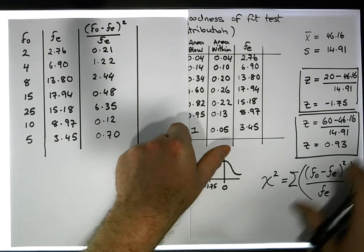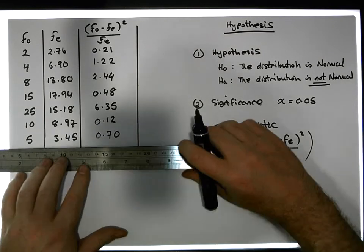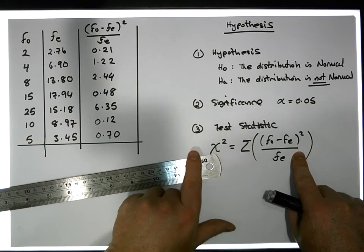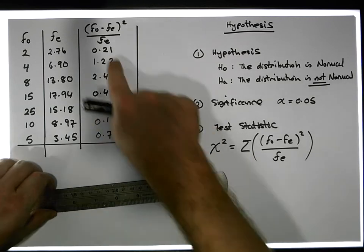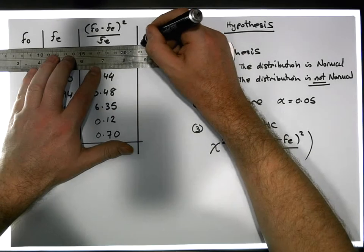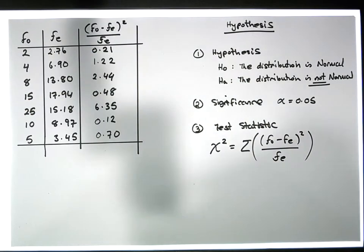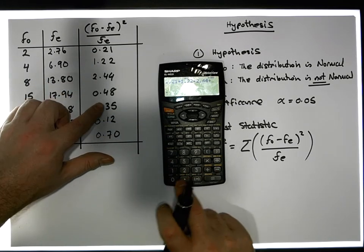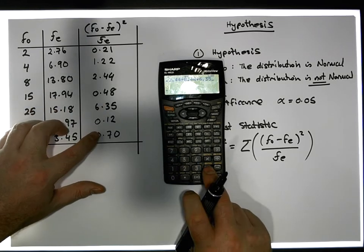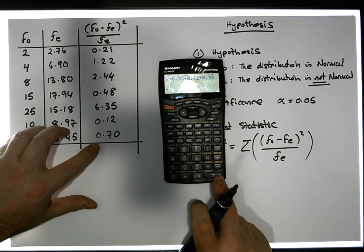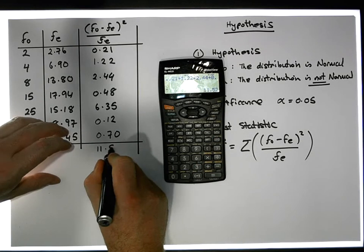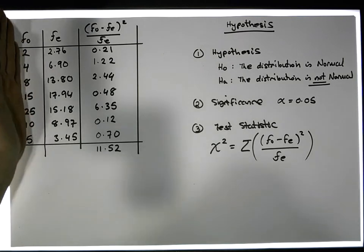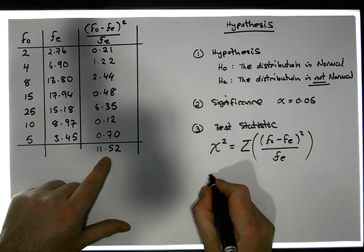So we've calculated all of these particular values. What we need for the test statistic is to sum them all up. Summing the column: 0.21 plus 1.22 plus 2.44 plus 0.48 plus 6.35 plus 0.12 plus 0.70 gives a value of approximately 11.52. So the difference between the observations and expected, in chi-squared terms, is 11.52. My test statistic is equal to 11.52.